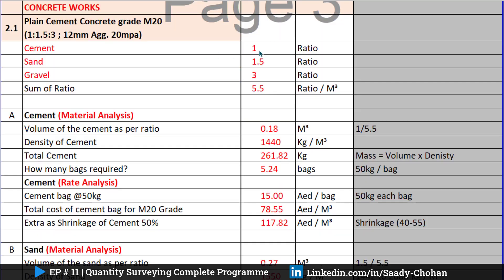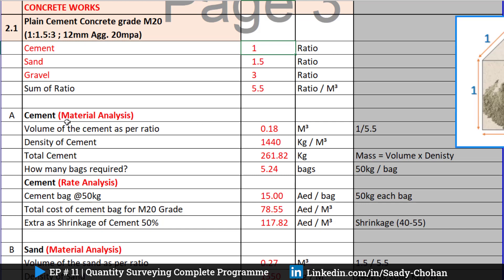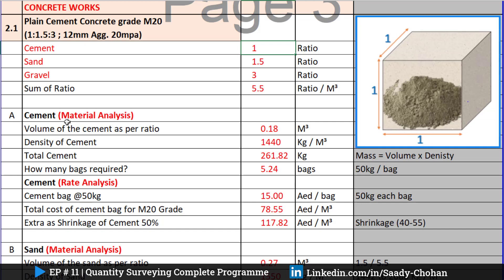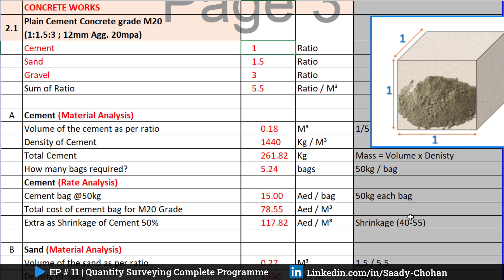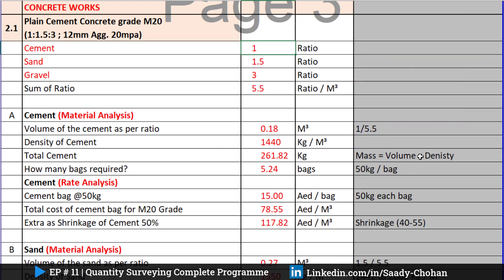Let's focus on the calculation. You can see I've mentioned the ratio for cement, sand, and gravel — each separately — and the sum of ratio. Let's start with cement. We need to know how much cement is required in 1 cubic meter. The ratio is 1, but how much will it be? I've divided the cement ratio by the overall sum of ratio, and I get 0.18 cubic meters as the volume of cement.